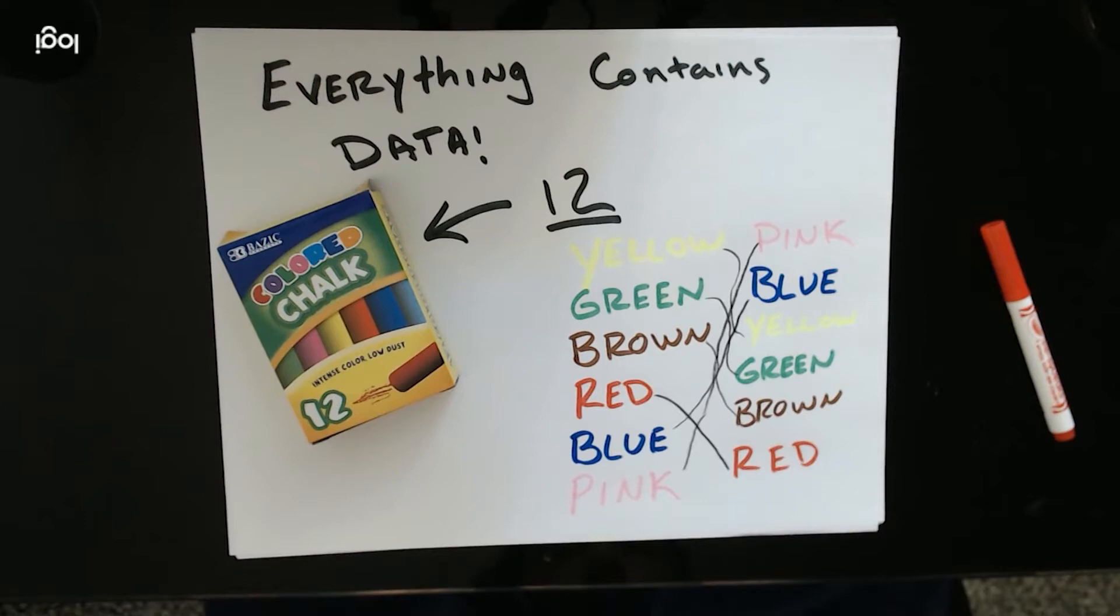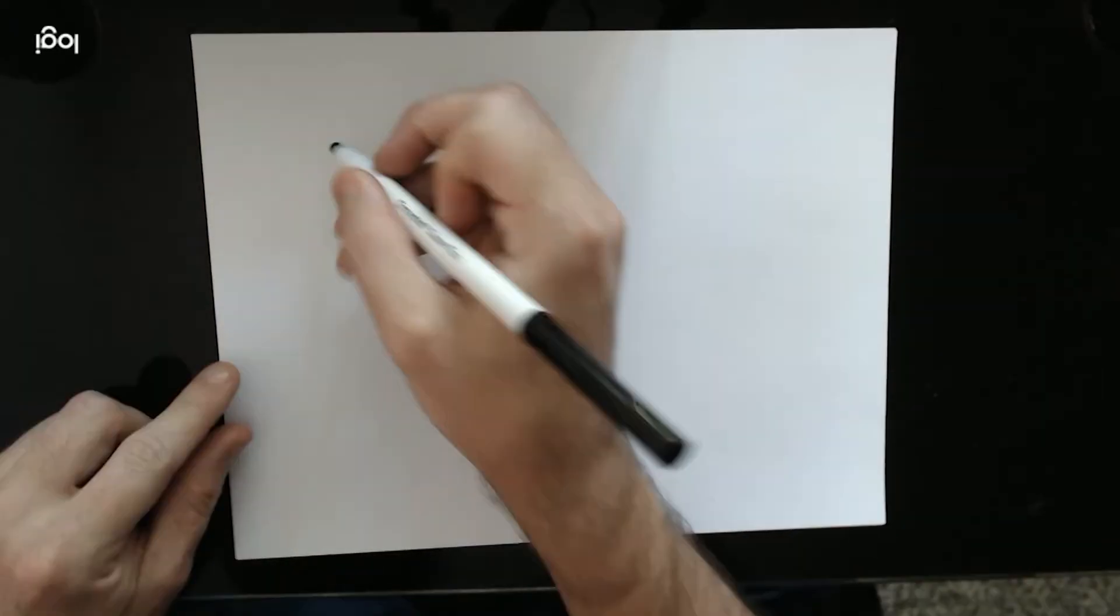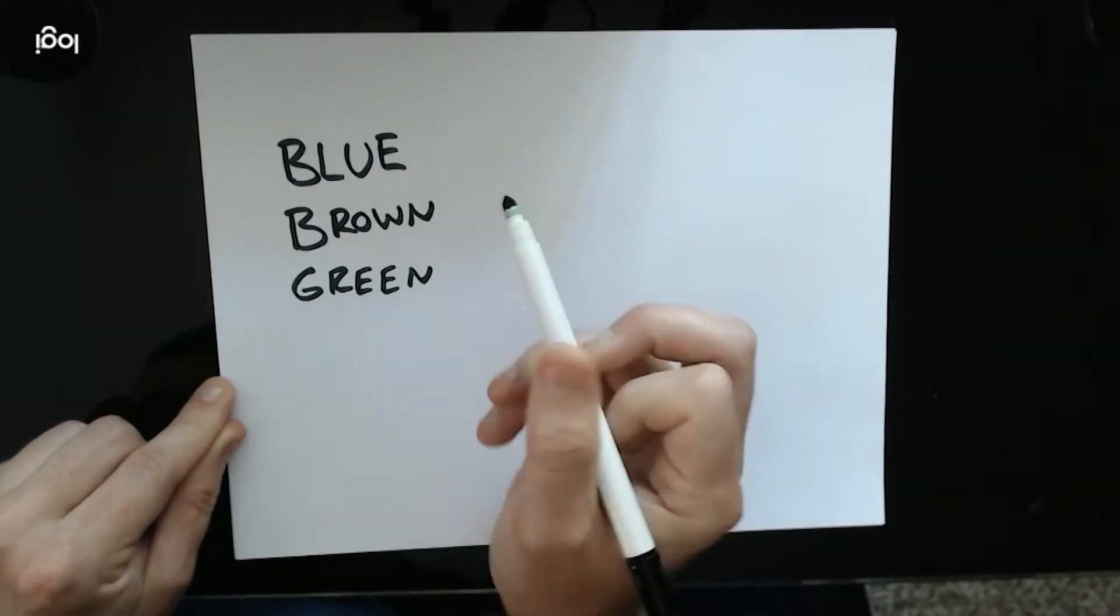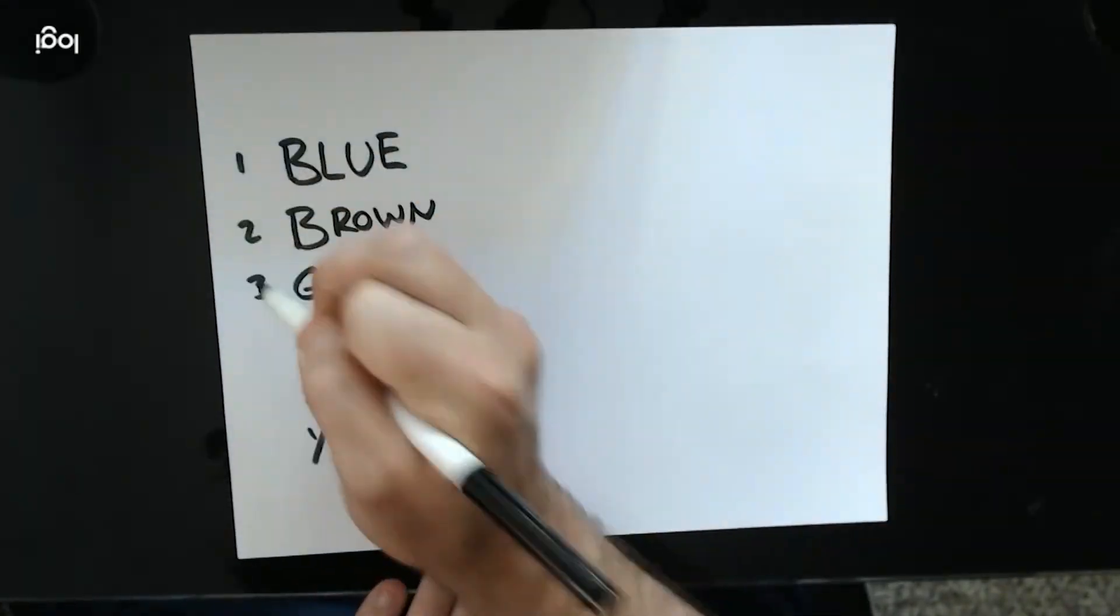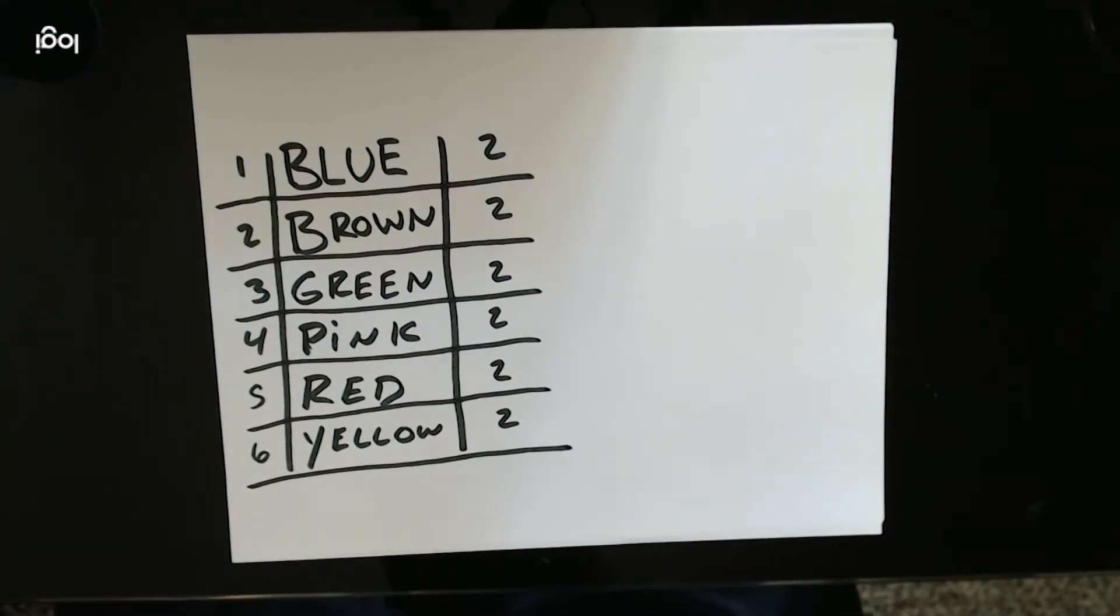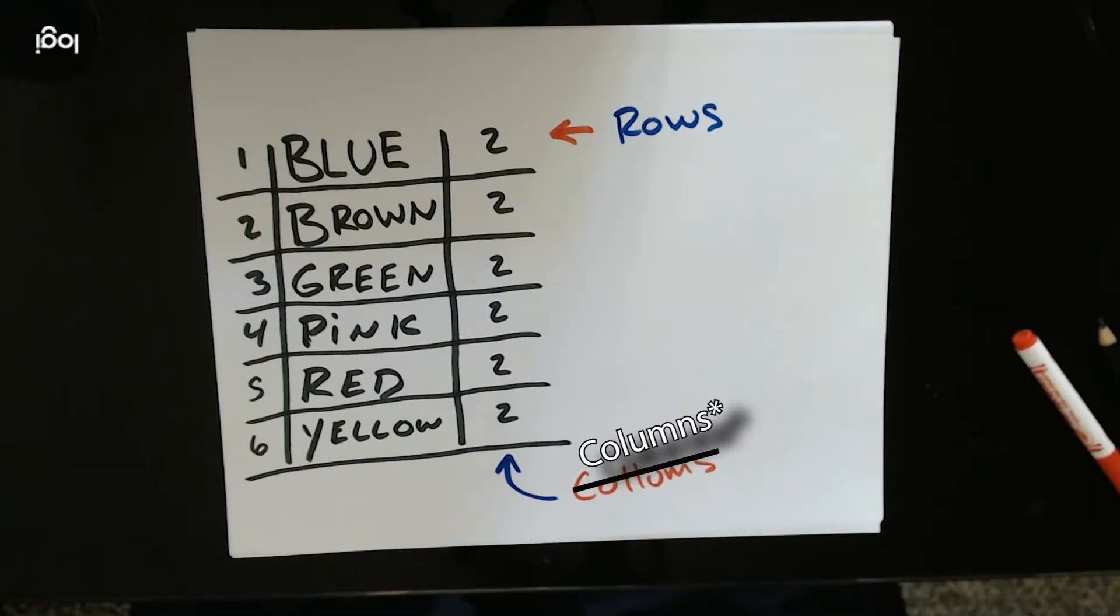But this is messy and unorganized. Instead, we can arrange the individual items alphabetically, number them, and also list the quantity. Using rows for individual items and details about the items in the columns, the information gathered from the box of chalk is now organized.